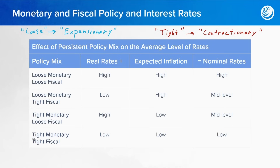Tight monetary policy would be raising short-term rates. And this would be maybe because the economy is too hot, or perhaps there's some level of inflation. And so now you're needing to tighten, which means typically rising short-term interest rates.